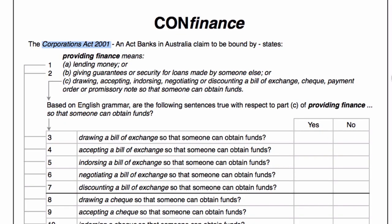What we're going to do here is have a little look at the Corporations Act of 2001, which is an act that banks in Australia claim to be bound by. We're looking at the definition specifically of providing finance. So we've got three ways here: A, B and C.